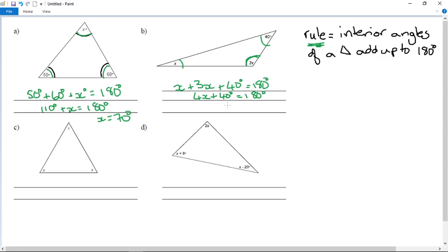So that means 4X equals 180 degrees minus 40 degrees. Remember, I'm doing inverse operations. So 4X equals 140 degrees. So X equals 140 degrees divided by 4. So X equals, 4 goes into 14, 3 times carry the 2, 4 goes into 25. X equals 35 degrees.